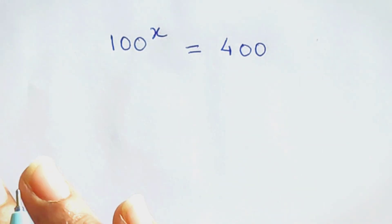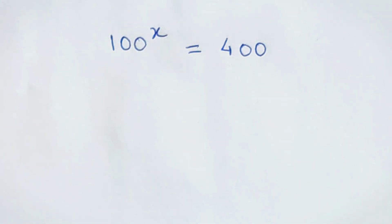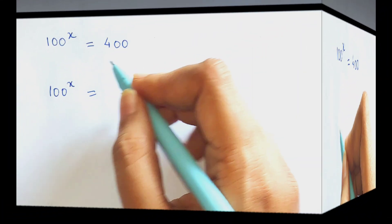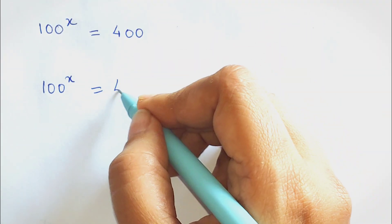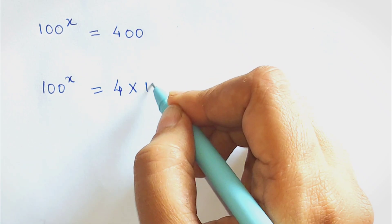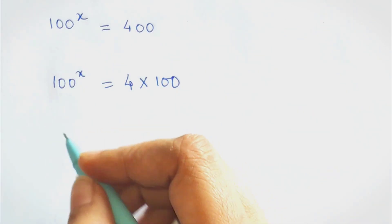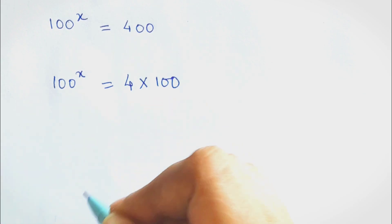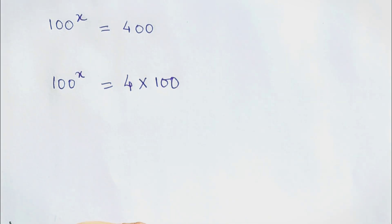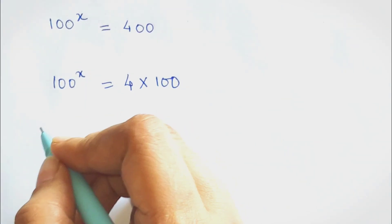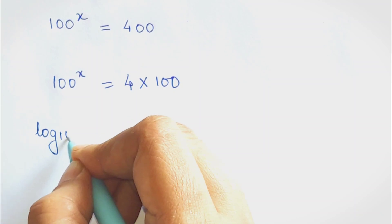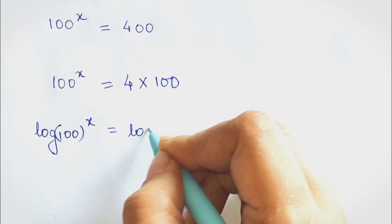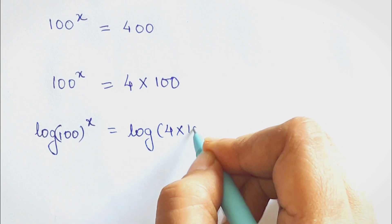Whenever you come across something like this, you can always write the constant 400 in terms of 100. What we can do is take log on both sides, because after this we can't do much. So we take log of 100 raised to x, equals log of 4 into 100.